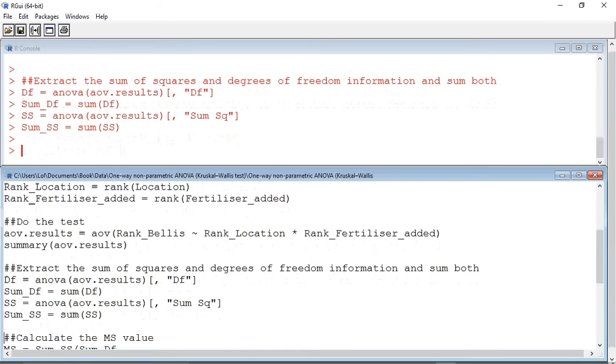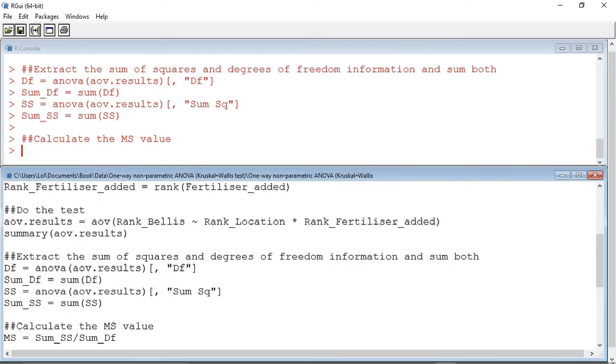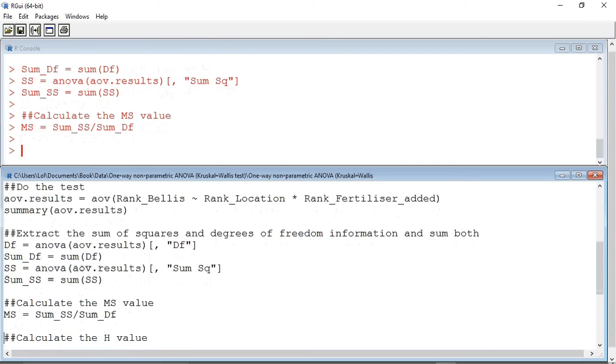So, let's calculate the mean square value. The mean square value is equal to the sum of all the sum of squares divided by the sum of the degrees of freedom. Now we can calculate an H value. The H value for location is the sum of squares found at position 1 in the SS variable divided by MS, the mean square value.